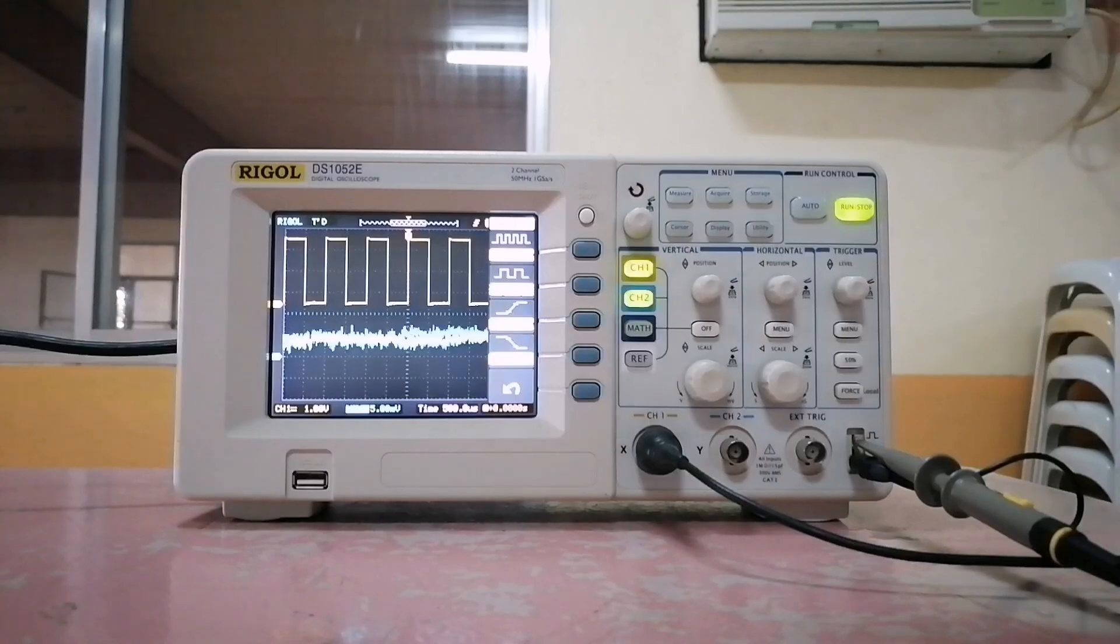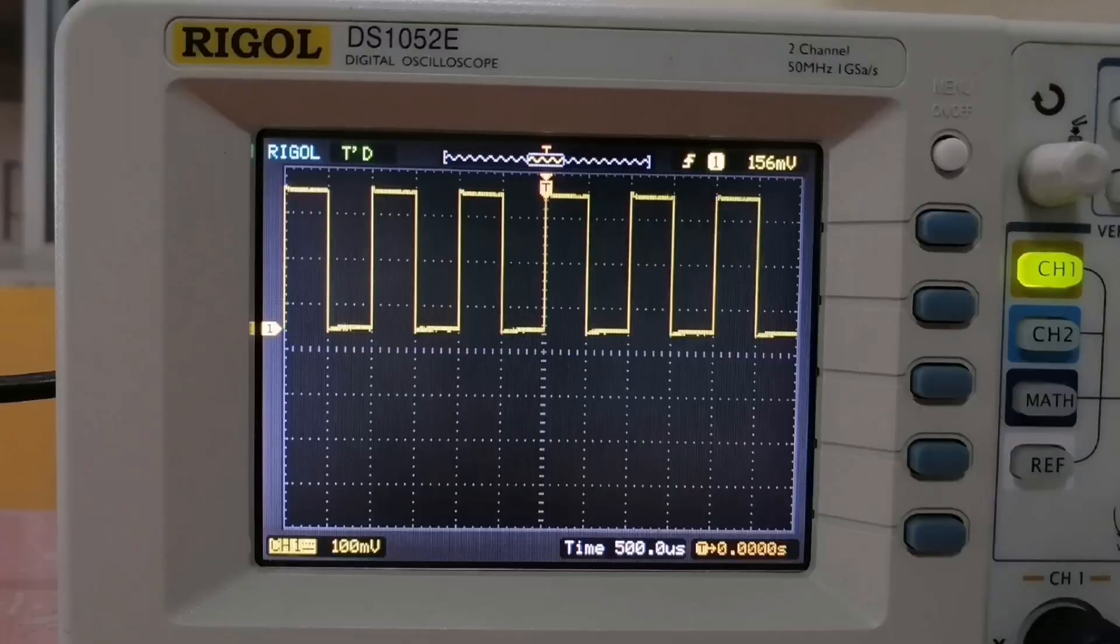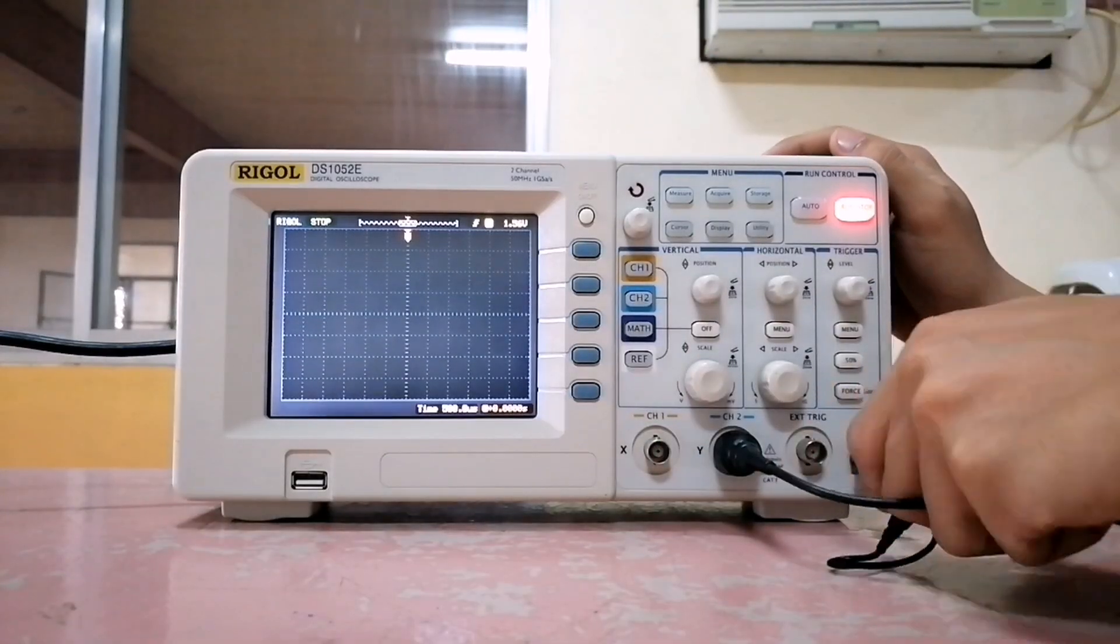We can turn off channel 2. Once you see a square wave, you are done with the setup. Repeat the process for channel 2.